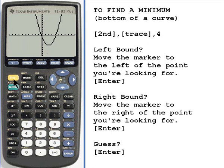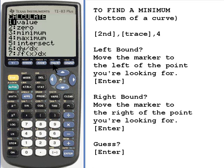And I want to find the minimum point. So I'm going to once again press 2nd and trace. And here I'm looking for the minimum, so I want this third one. I can just press the 3.